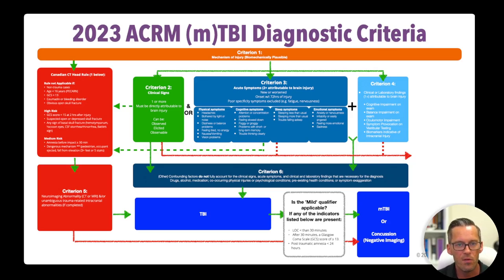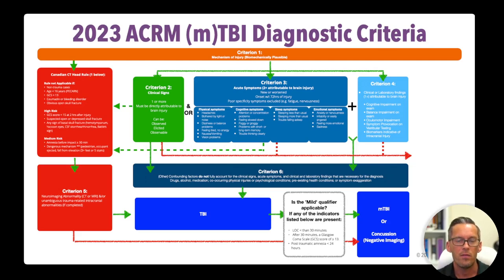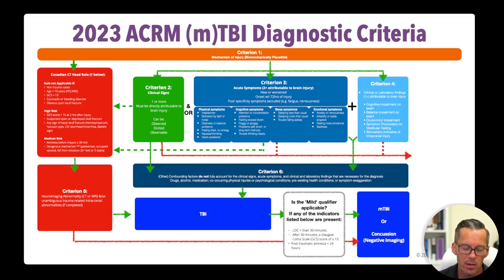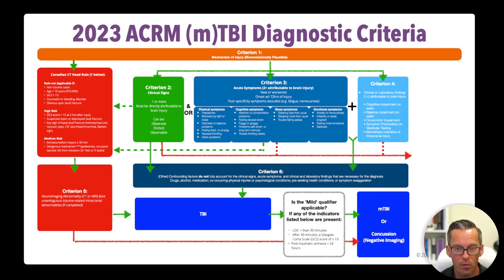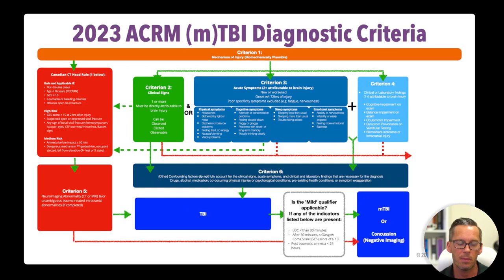If criterion four is positive and you have two or more symptoms from criterion three, you can move forward to criterion six. To summarize: if you meet criterion two, you go straight to six. If you don't meet two, you need three and four together, then proceed to criterion six. Criterion six says that other things can't account for two, three, and four. If other things don't account for criteria two, three, and four, you can move on to your diagnosis of traumatic brain injury — figure out if it was mild and if it was a concussion.